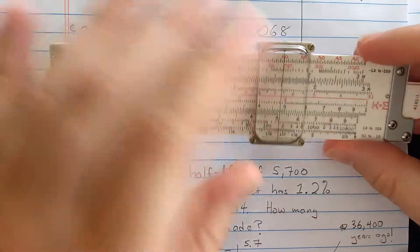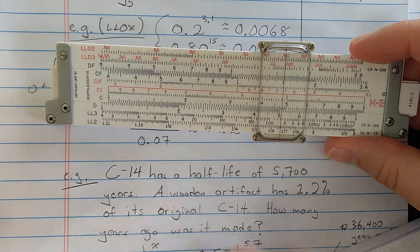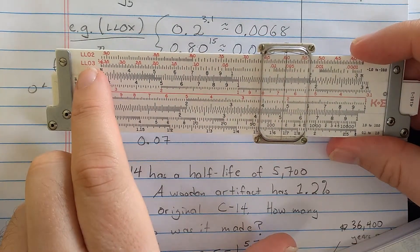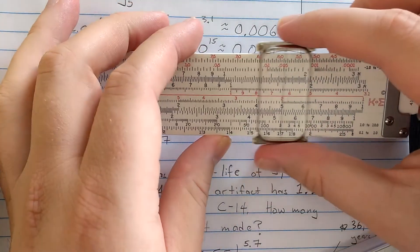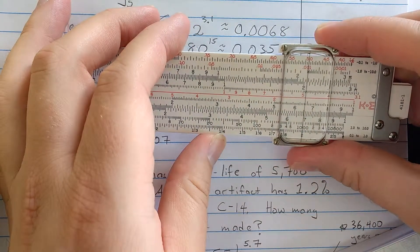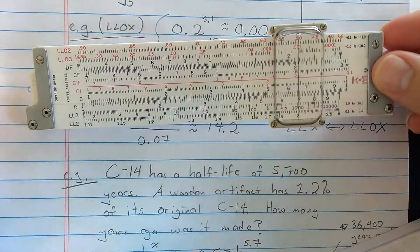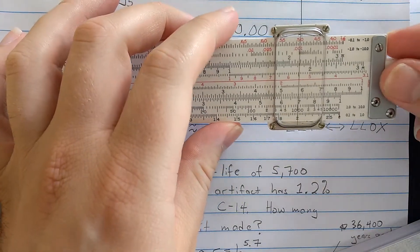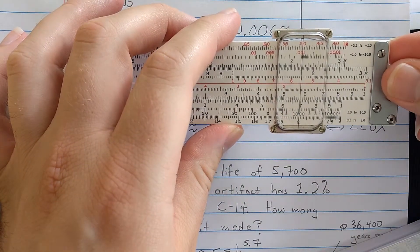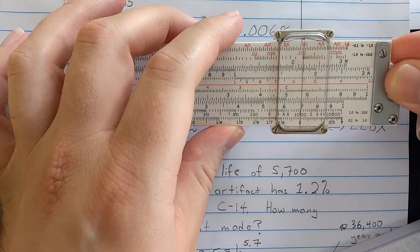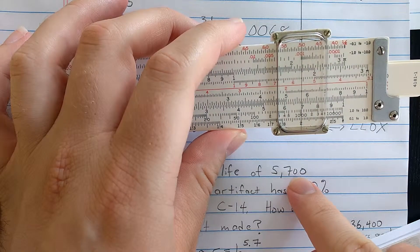Let's see how the slide rule could do a very fast solution of this. So what I'm going to do up here, this is exponential decay, so I'll use the log-log-0 scales. I'm going to find 0.5 upon log-log-2.